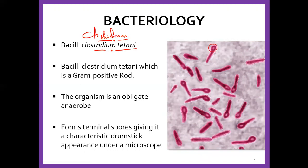Clostridium tetani can occur in two ways: it can be in the rod form, which is the vegetative form, or it can form spores. It all depends on the environment it finds itself in. If it's in a very harsh environment that is not conducive for its growth, it's going to be in a spore form, which is very hard to destroy. If conditions are conducive, it will be in its normal rod form and can divide and divide.